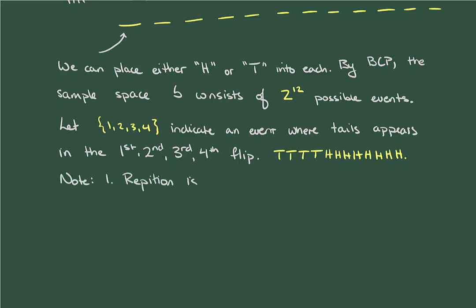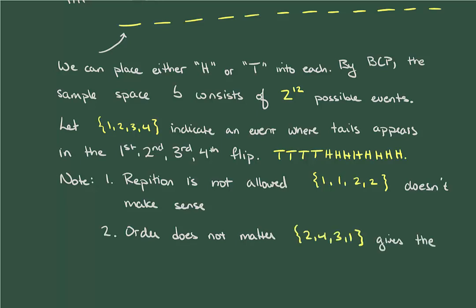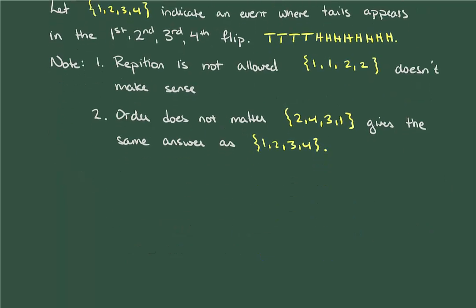So with this notation, we note that repetitions are not allowed. 1, 1, 2, 2 just doesn't make sense at all. Additionally, order also doesn't matter. 2, 4, 3, 1 gives exactly the same placement of tails as 1, 2, 3, 4.